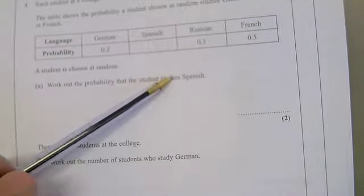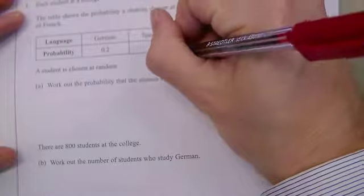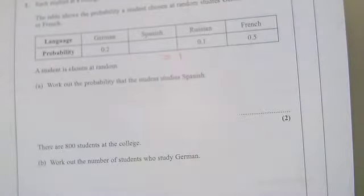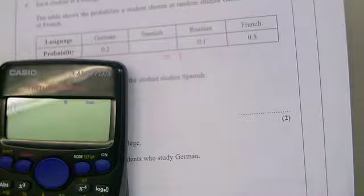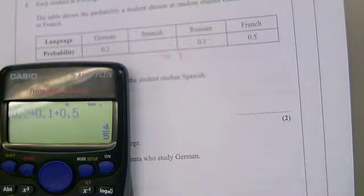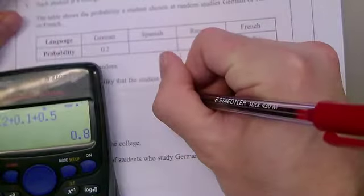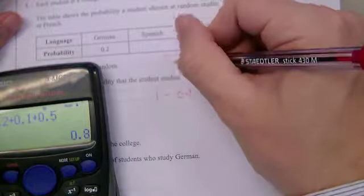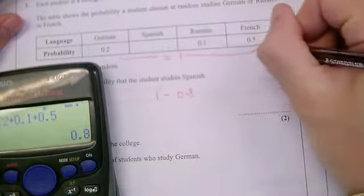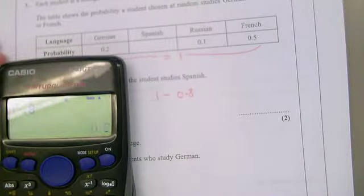It's asking me to find the probability that they study Spanish. Jenna's already told me that all probabilities must add up to one, so I know all of those must add up to one. I could do this in my head but I have a calculator just to be certain. So 0.2 plus 0.1 plus 0.5 comes to 0.8. Is that the answer for Spanish? No, I need to do one take away 0.8, which gives us an answer of 0.2.